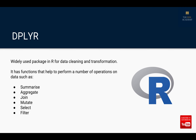dplyr is a widely used package in R for data cleaning and transformation. It has functions that help perform a number of operations on data such as summarize, aggregate, join, mutate, select, and filter — and this list is not exhaustive. There are other functions also under this package. Today, however, we will focus only on the join functions.